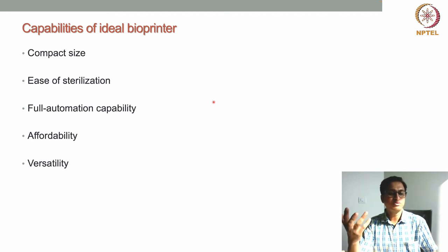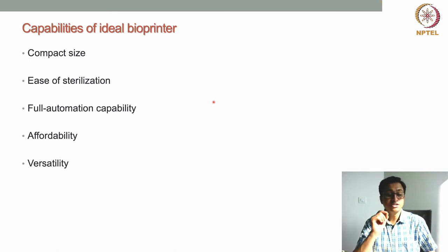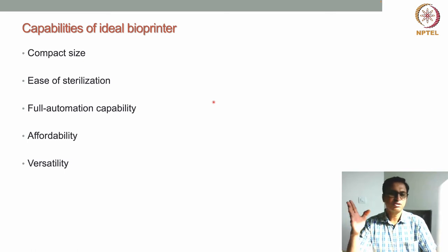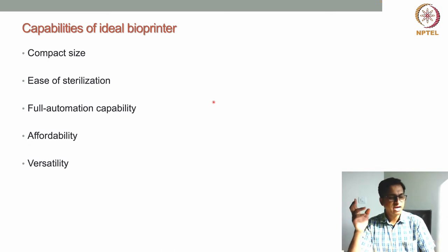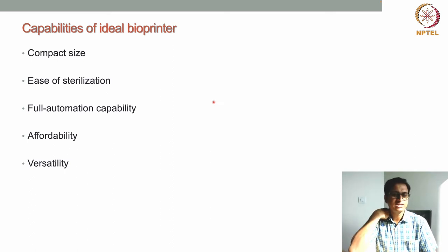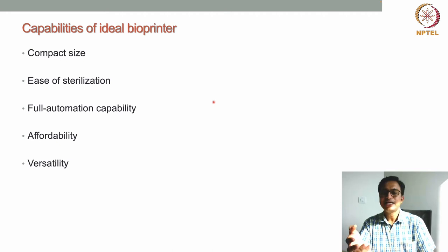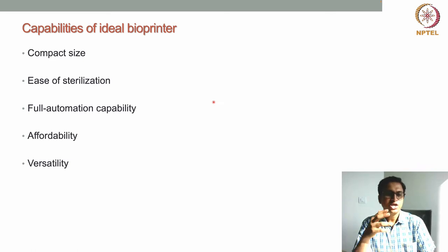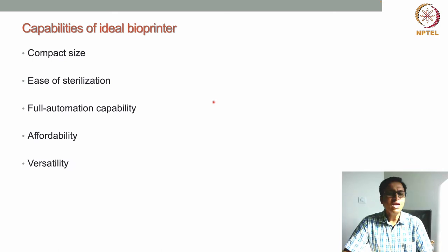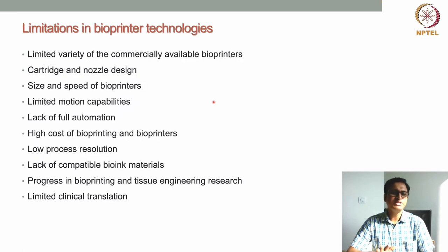Affordability is very important for the widespread use of bioprinters — the printer should be affordable so that many researchers and users can use it. Finally, the bioprinter should be versatile, able to print different types of materials, different viscosities, different types of cells, and different multicellular constructs. But do we have all these qualities in current bioprinters? Let us see the limitations.